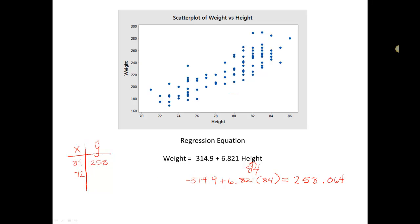So now I'm going to go ahead and plug 72 into my regression equation. Negative 314.9 plus 6.821 times 72 this time, and that equals 176.212. So I'll put that over in my table over here, about 176.